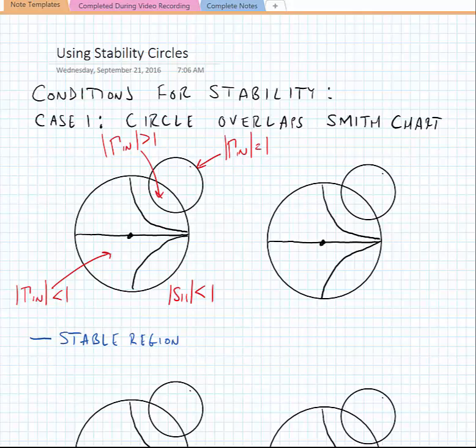The region of overlap is where gamma_in is greater than one, and the region where there's no overlap is where gamma_in is less than one. So we can say that in the case where S11 is less than one, the region that I'm shading here would be our stable region.